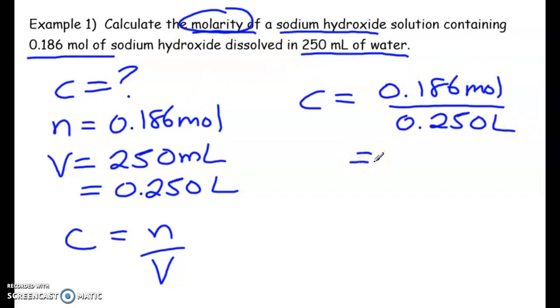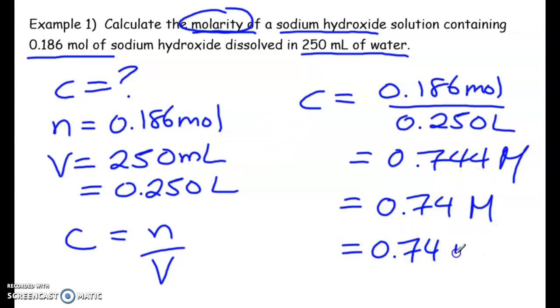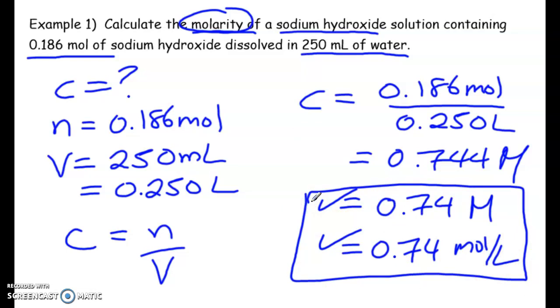Really, the hardest part is remembering what units things have to be in so that you get the correct answer. So this is 0.744 moles per liter or capital M. And the significant digits here is 2. So it's 0.74 moles per liter. So you can write it like this, or you can write it like this. They are both correct.